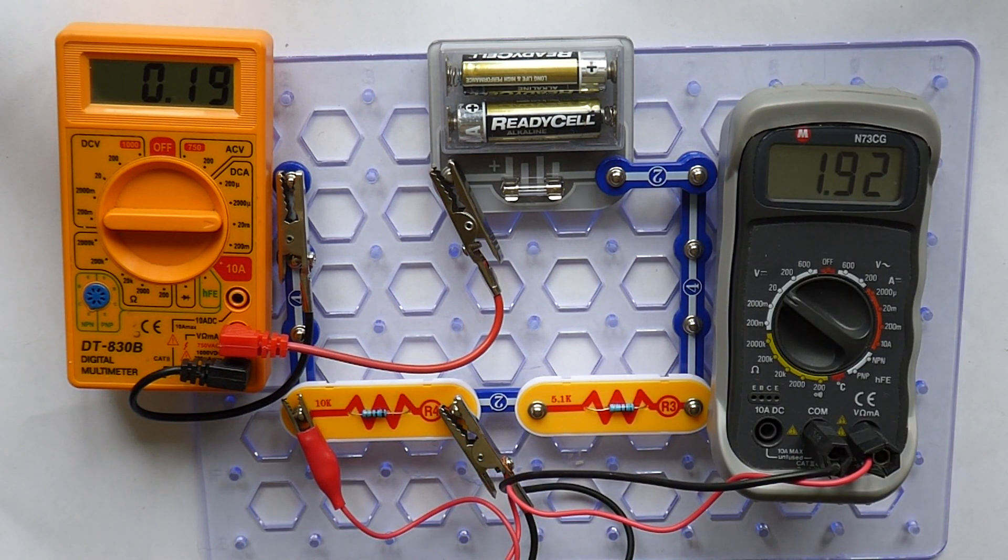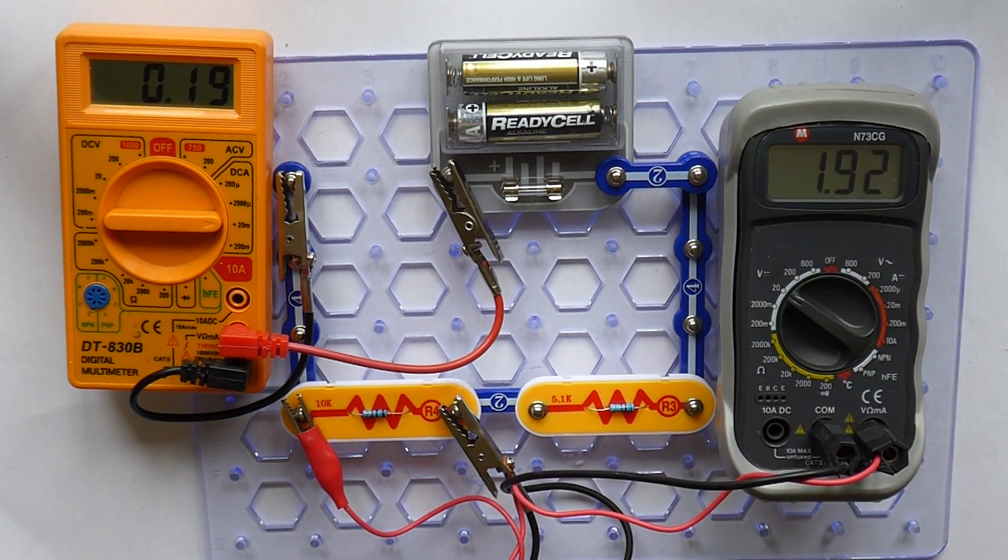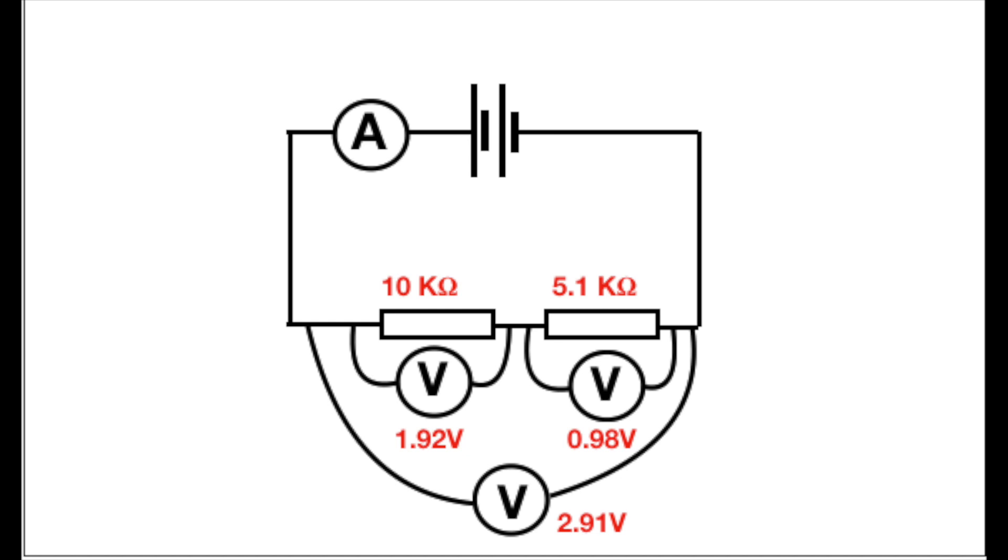Now there is a pattern here. You don't have to be brilliant to work out that 10 is almost double 5.1, and at the same time 1.92 volts is almost double 0.98 volts. There is a pattern that the ratio of the voltages is about the same as the ratio of the resistors.